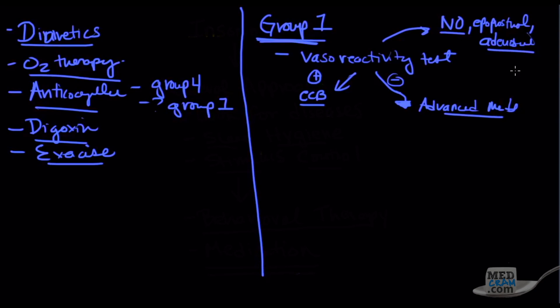And once again, it's considered positive if the mean pulmonary artery pressure decreases by at least 10 millimeters of mercury and goes to less than 40 millimeters of mercury, assuming that the cardiac output actually gets better or is unchanged. Patients with a positive reactivity test are ones that could improve with calcium channel blockers. Those that are negative will not respond to calcium channel blockers.